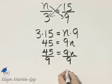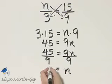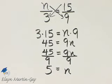On the right side, I have 1n or simply n. The left side, 45 divided by 9, is 5.